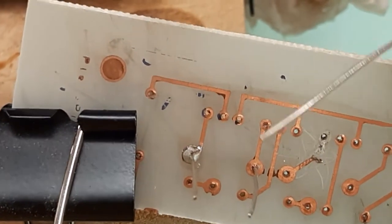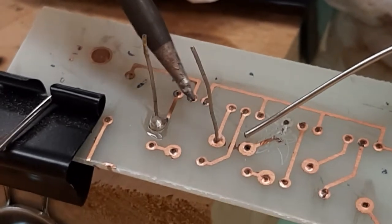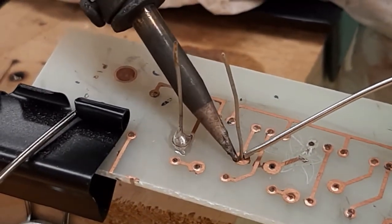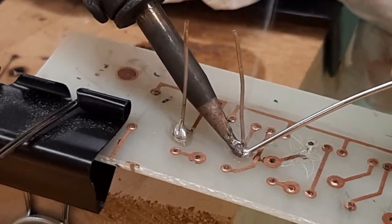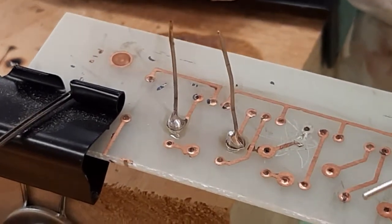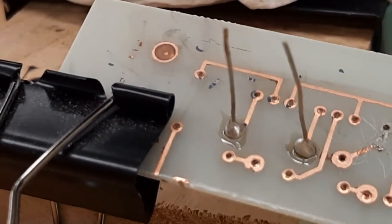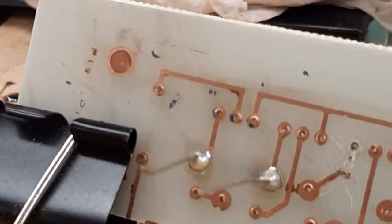So I'll show you that again. Tin it a little bit. Apply some heat, apply some solder, push the solder in, and then get out. Let it cool off. And it should look like a tiny volcano.